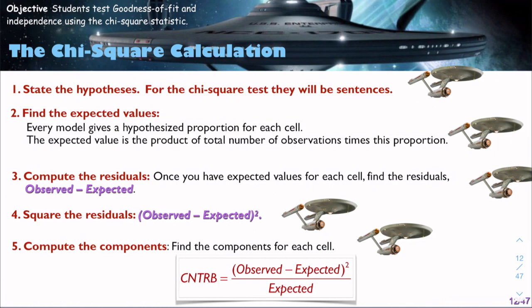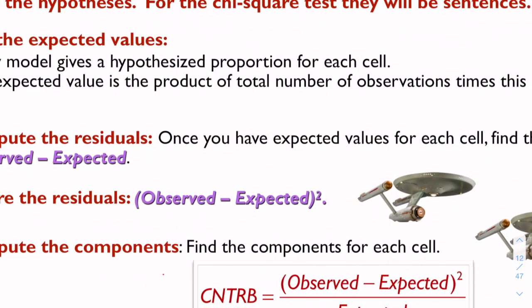Next, we are going to compute the residuals. Once you have the expected values for each cell, find the residuals. Then we square the residuals. Then we compute the components. The component is for each cell, we take the observed minus the expected, square it, divide it by the expected value. Notice that CNTRB, depending on what calculator you have, stands for contributions.